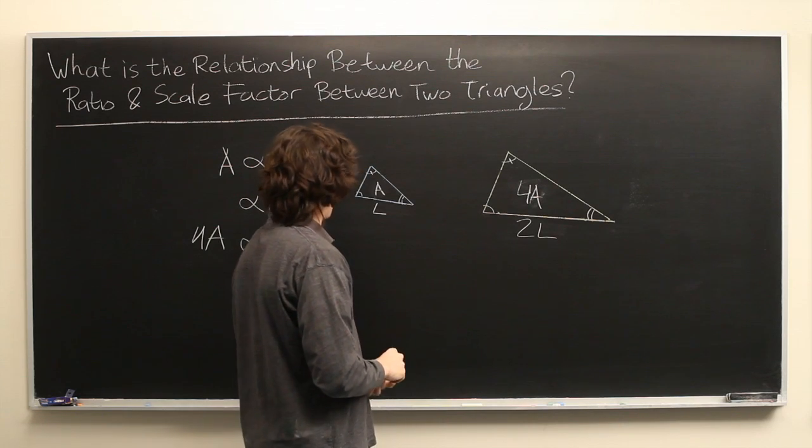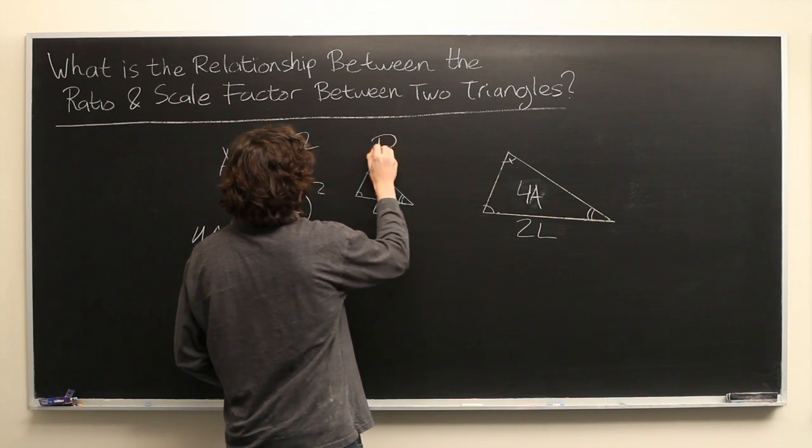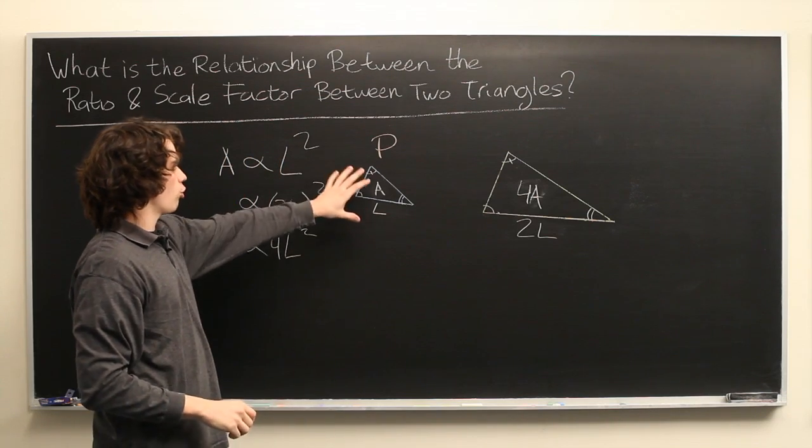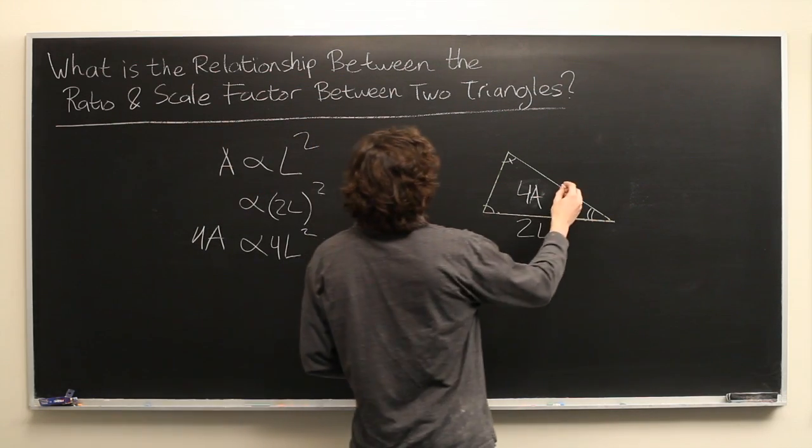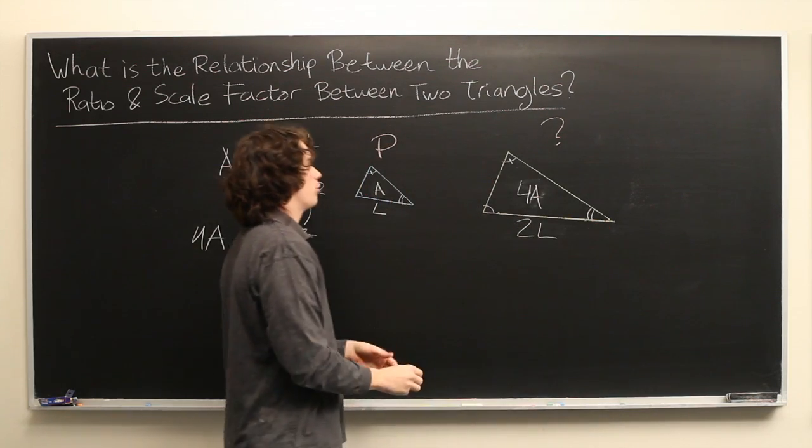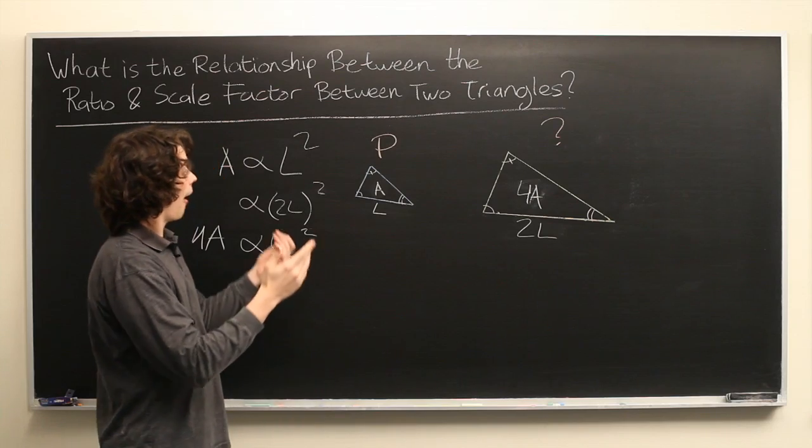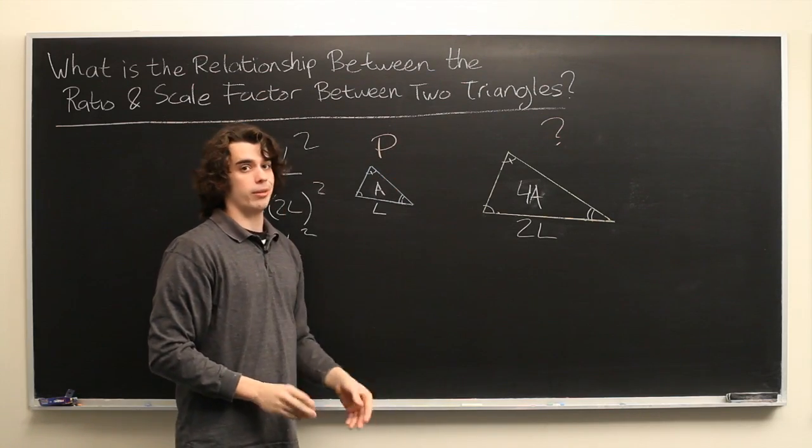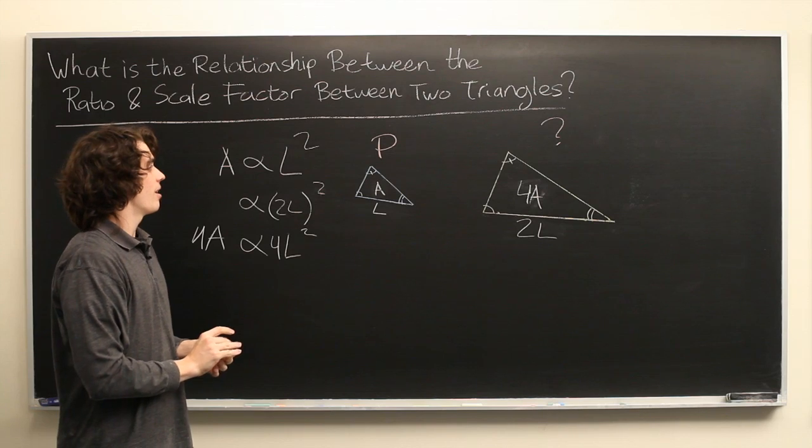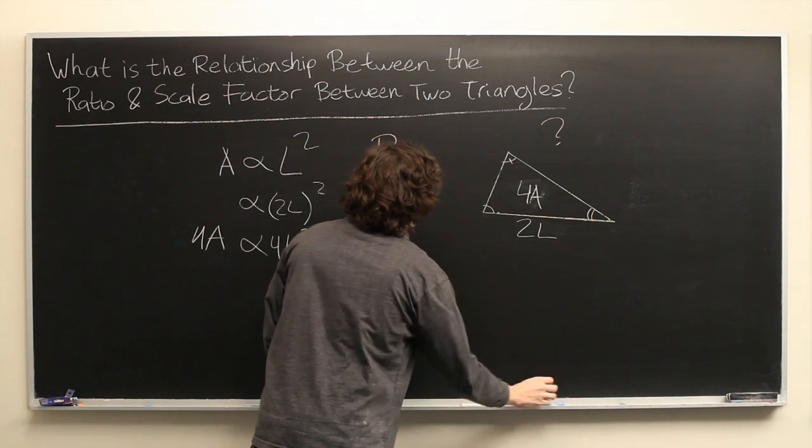Okay. Well, what about the perimeter of the triangle? If this has a total perimeter of P, and we want to know what is the perimeter of this triangle if all the side lengths are doubled. Well, you might think, oh, we just did our proportionality statement. Therefore, this must be 4P. But, I have to be a little bit more careful than that. So, let's see here.